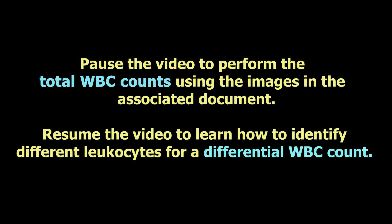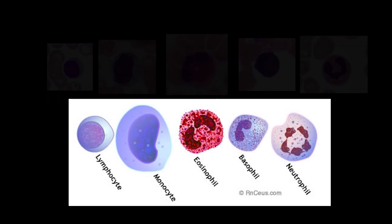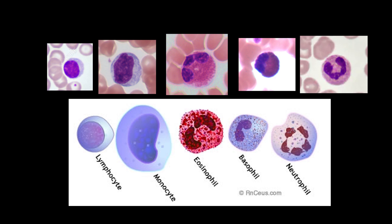Now we're going to look at the different types of leukocytes so we can perform our differential white blood cell count. This image shows schematics of the five major leukocytes found in the blood. Unfortunately, this picture belies how difficult it can be to distinguish them with an untrained eye. Here are real cells superimposed over their drawings — lymphocytes, monocytes, eosinophils, basophils, and neutrophils from left to right.